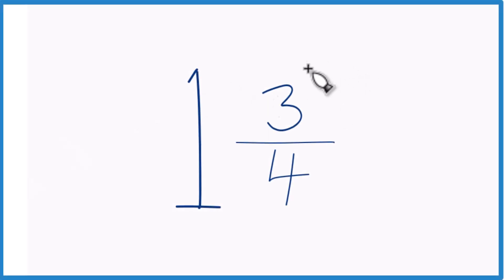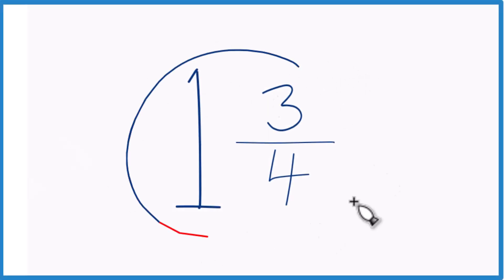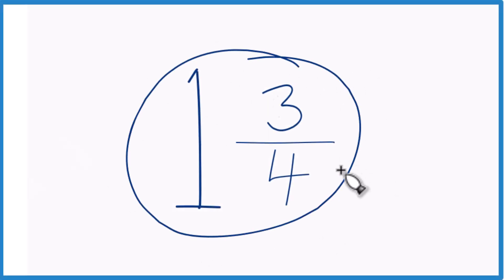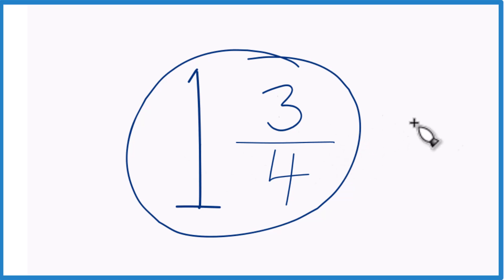So let's write the mixed number 1 and 3 fourths as an improper fraction. That's where the numerator is going to be larger than the denominator.